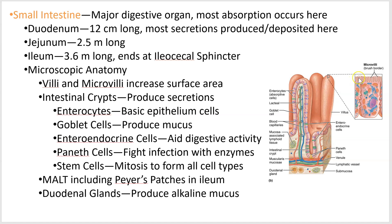Microvilli — you can see the little zoom-in right there — are cytoplasmic extensions of the epithelial cells themselves. These simple cuboidal epithelial cells make up the wall of the intestine. Both villi and microvilli function to increase surface area; the more surface area you have, the more you can absorb and secrete.